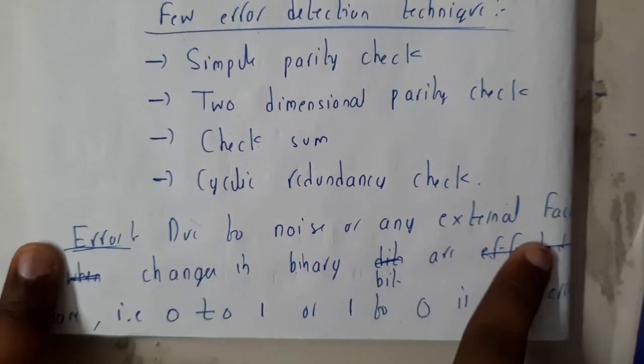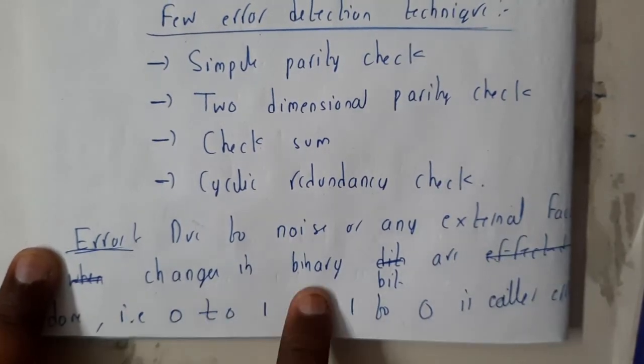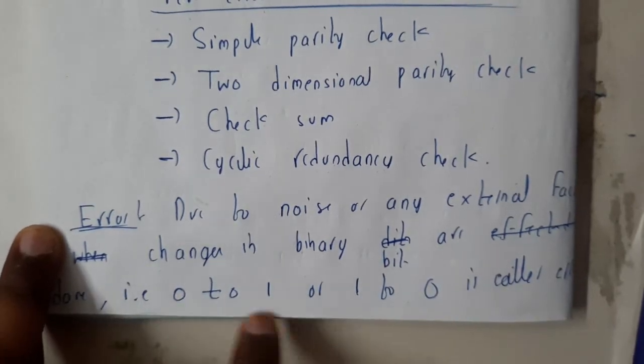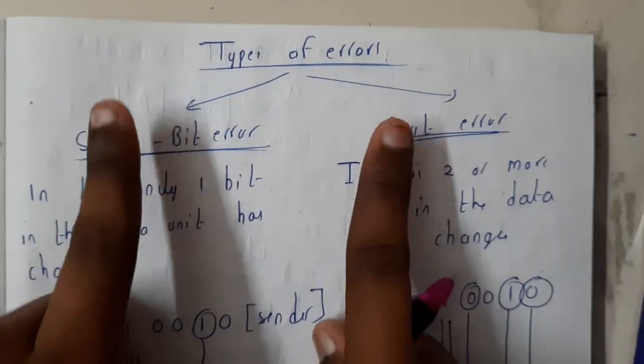Due to noise or any external factor, change in the binary bits from 0 to 1 or 1 to 0 is called an error. Basically, there are two types of errors: single error and burst error.